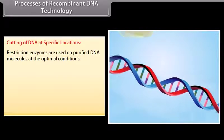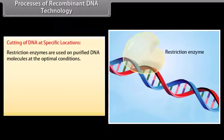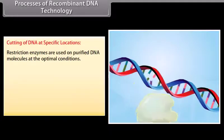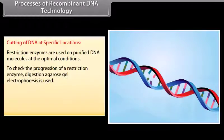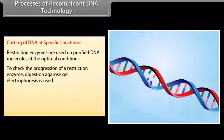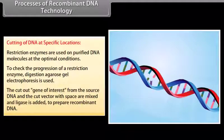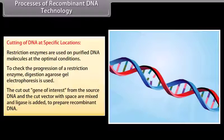Cutting of DNA at specific locations. Restriction enzymes are used on purified DNA molecules at the optimal conditions. To check the progression of a restriction enzyme digestion, agarose gel electrophoresis is used. The cut out gene of interest from the source DNA and the cut vector with space are mixed and ligase is added to prepare recombinant DNA.